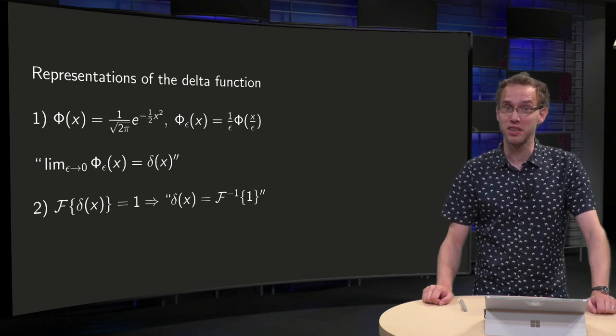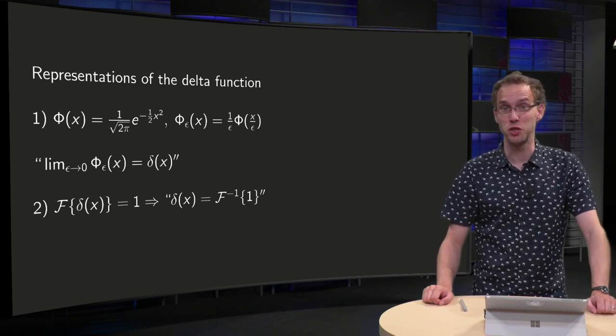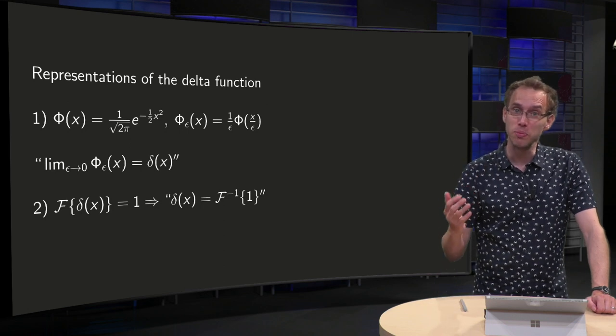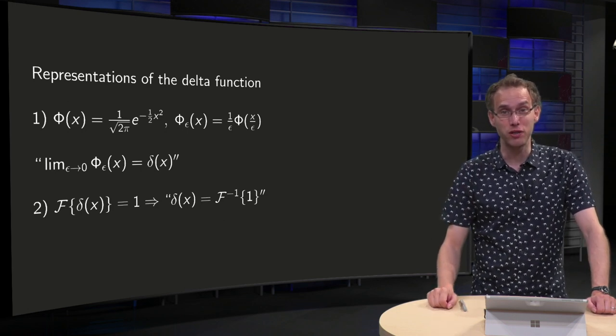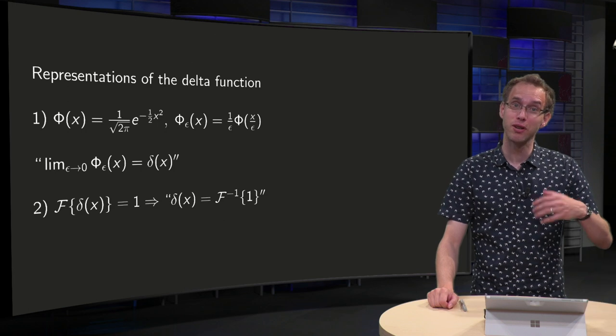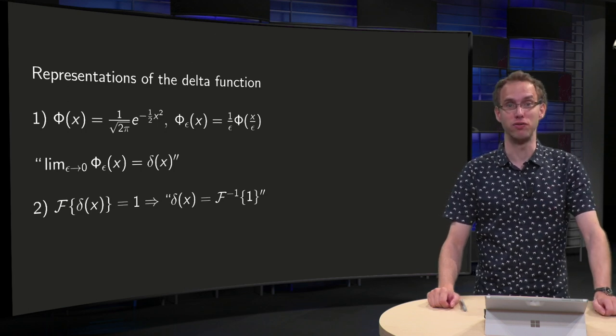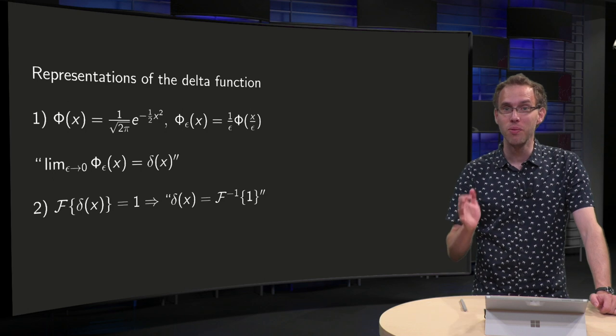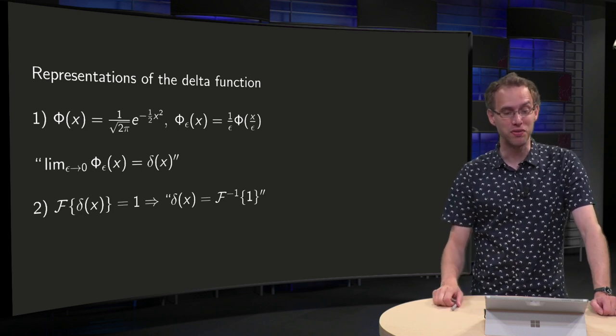We have seen that the Fourier transform of the delta function is 1, so we should be able to obtain an expression for the delta function if we compute the inverse Fourier transform of 1. Or not? Well, let's try and see what happens in this video.